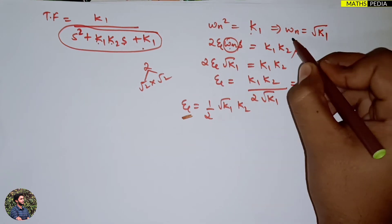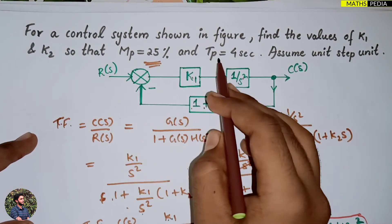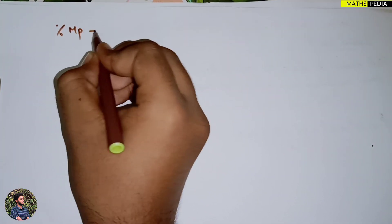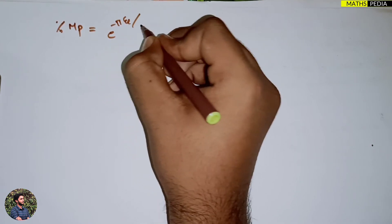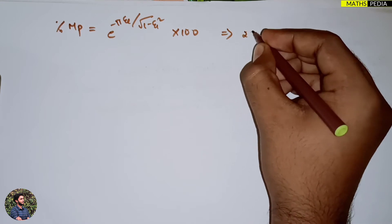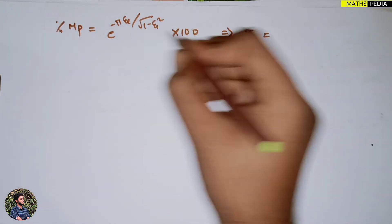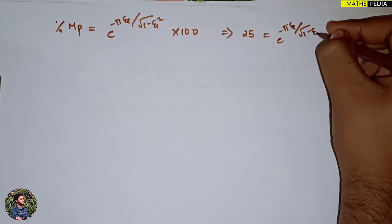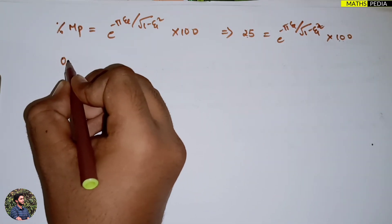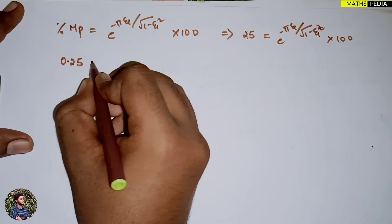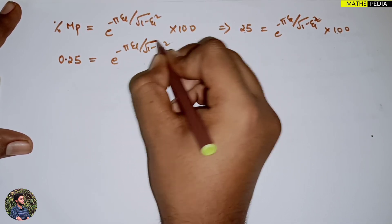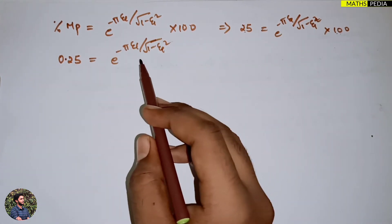We have ωn = √k1 and ζ = (1/2)·√(k1)·k2. Since Mp and tp are given, we apply the Mp formula: %Mp = e^(−πζ/√(1−ζ²)) × 100. Substituting Mp = 25%, we get 0.25 = e^(−πζ/√(1−ζ²)).